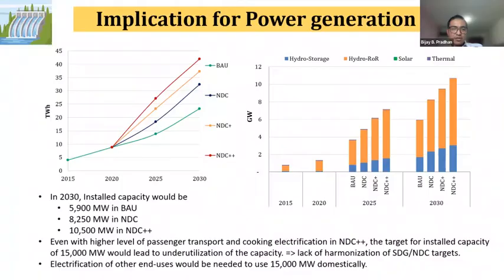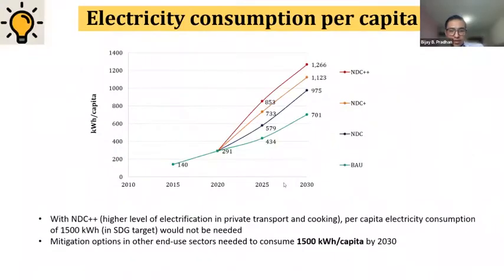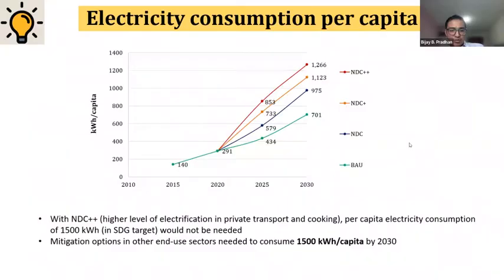The graph here shows electricity consumption per capita. In BAU by 2030, electricity consumption per capita would be about 700 kilowatt-hour. In the NDC scenario it would be 975, and in the NDC plus-plus scenario it would be around 1,266. In all three NDC scenarios, it would still be lower than the 1,500 kilowatt-hour target in the SDG. So mitigation options in other end-users would be needed to consume 1,500 kilowatt-hour per capita.